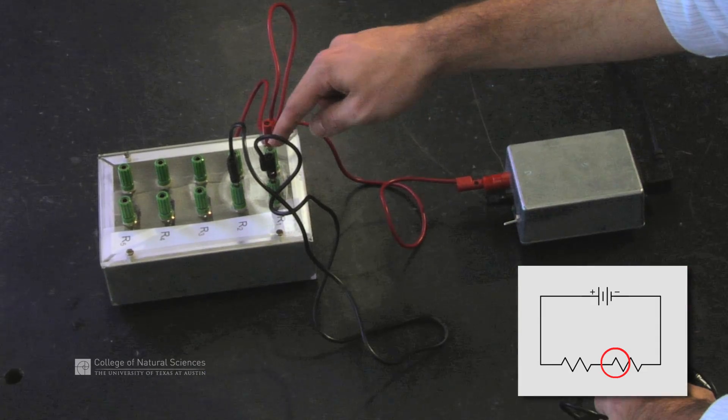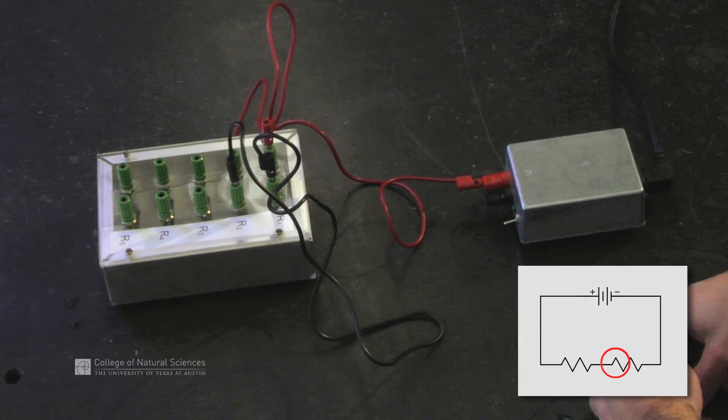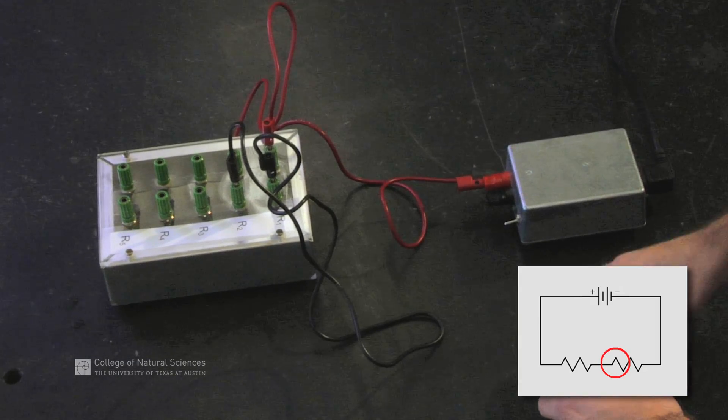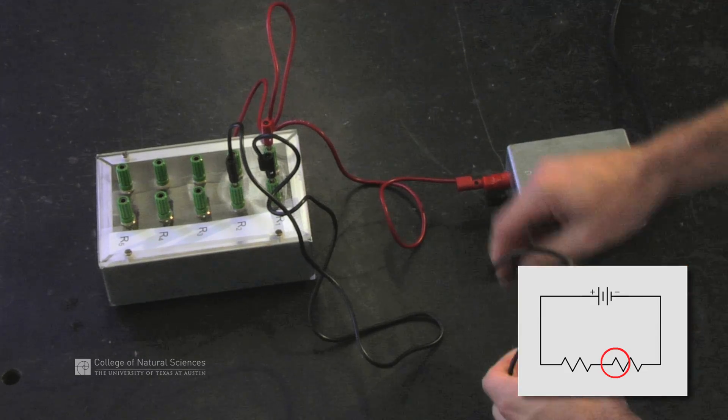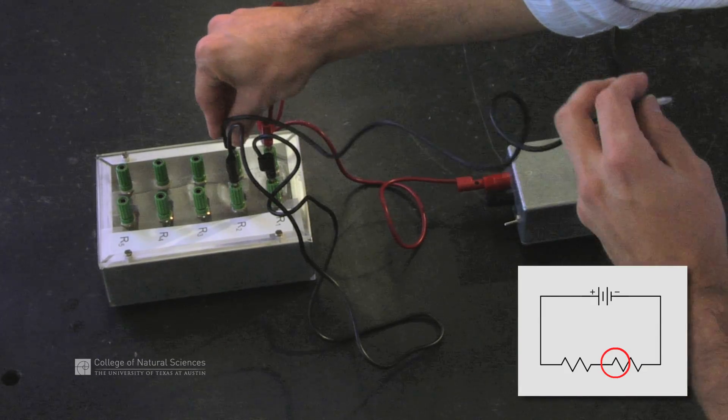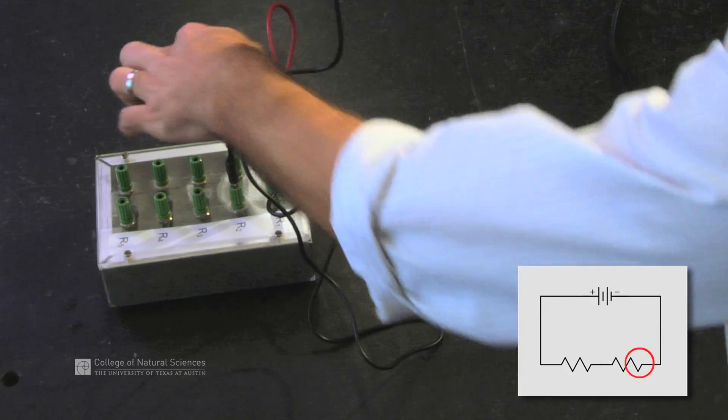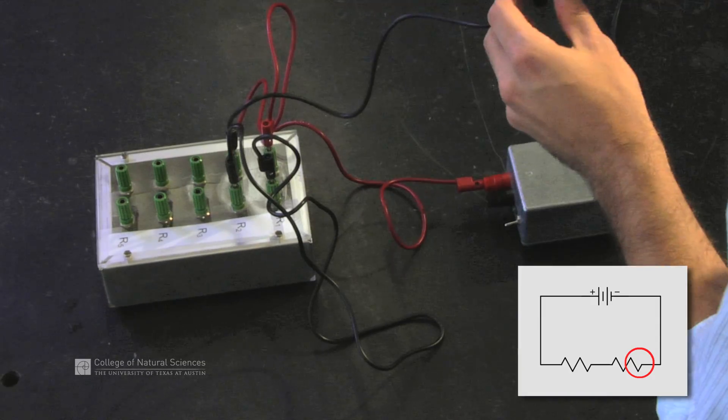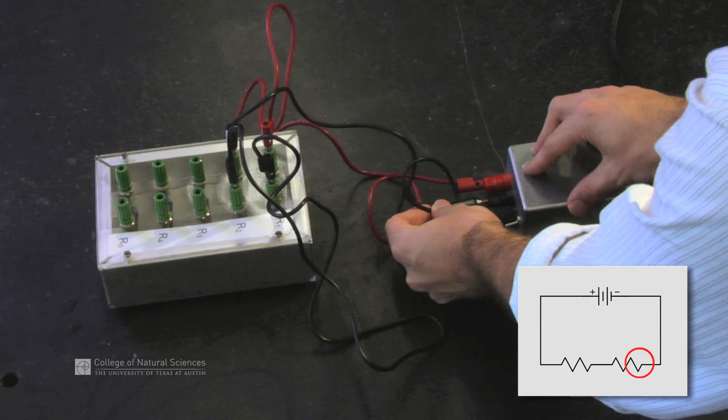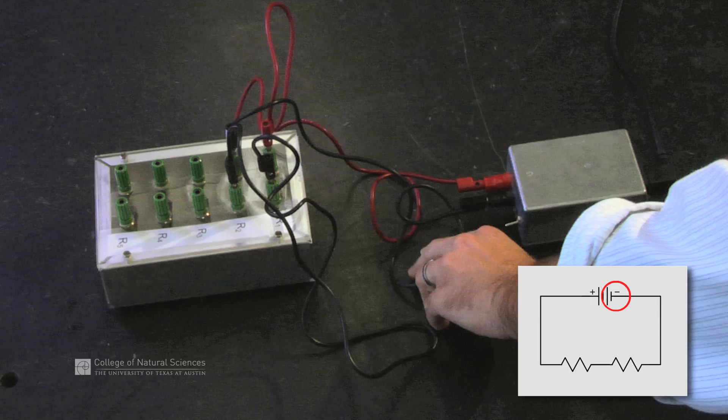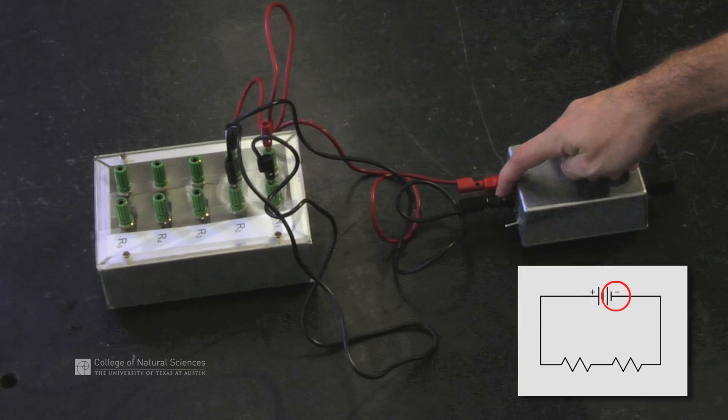So we've connected the first resistor to the second resistor through a wire. Now the second resistor is connected back to the power supply by a third wire. So we connect the resistor to the third wire, and the third wire connects back to the negative terminal of the power supply.